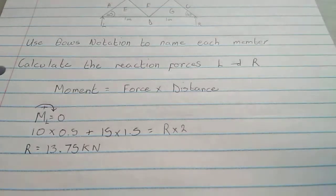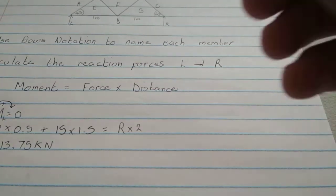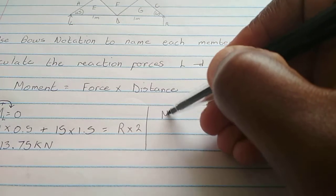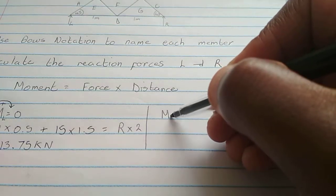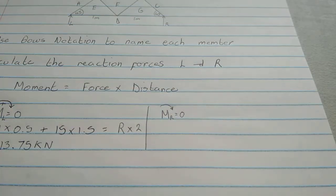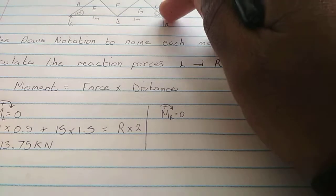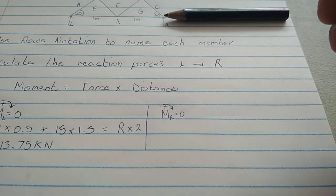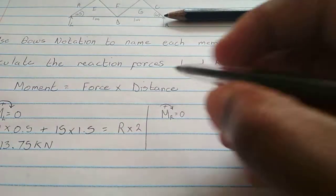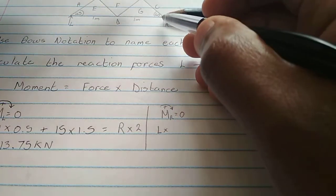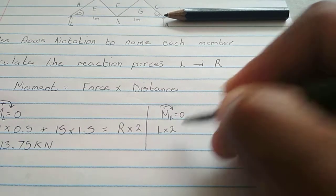All right. We're going to do the same for the calculation of L. So, let's just split that there and take the moment now about R. And the moment there must be equal to 0. Still, let's take clockwise as positive. So, now, we are standing there. We'll put our pencil there. And it starts this side. We have L, just a force of L at a distance of 2 meters from R.